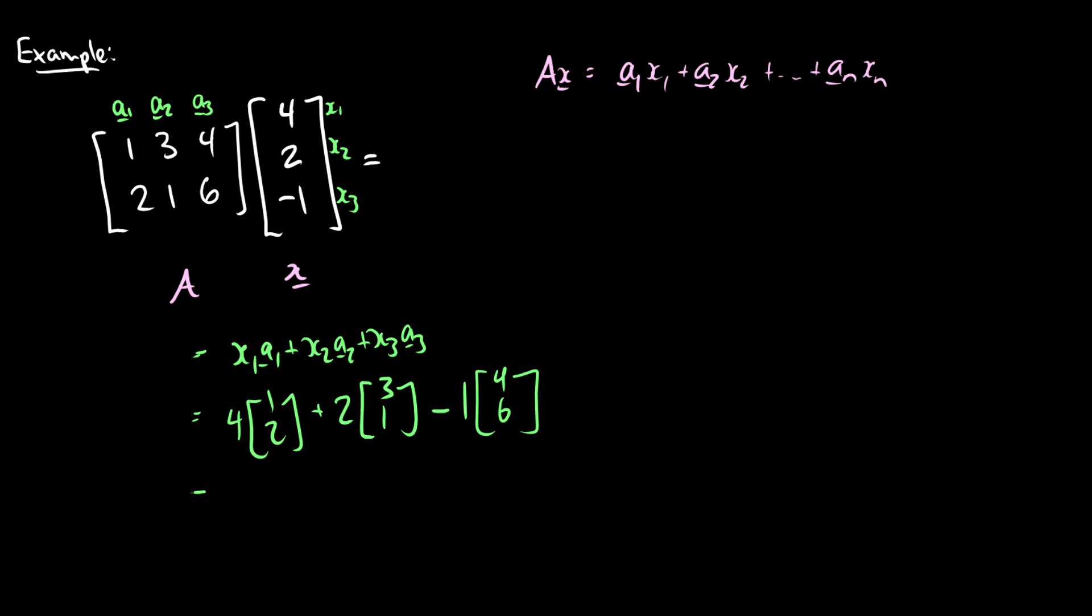So using simple vector multiplication and addition here, we're going to see this is 4 8 plus 6 2 minus 4 6, and this comes out to be 4 plus 6 minus 4 is 6, and 8 plus 2 minus 6 is 4. So this end result is the vector 6 4.